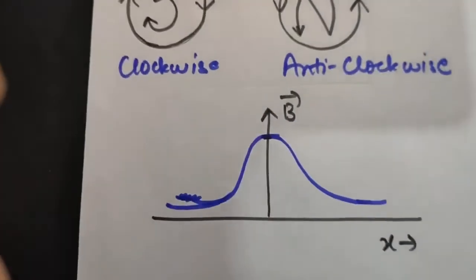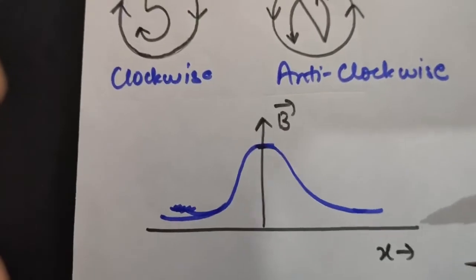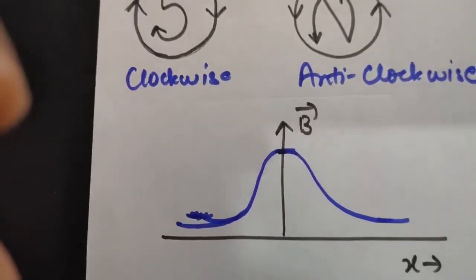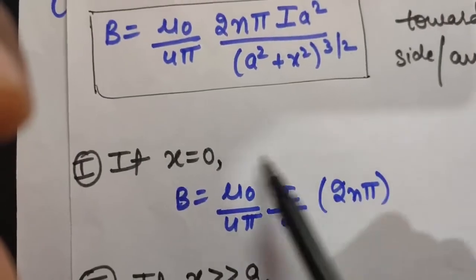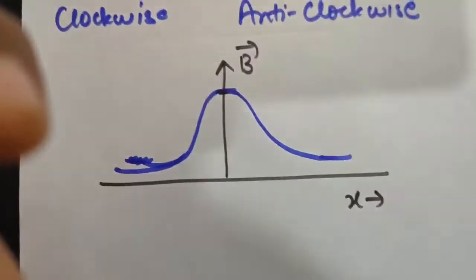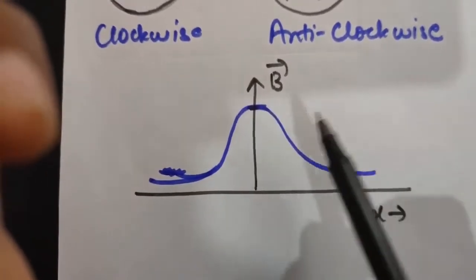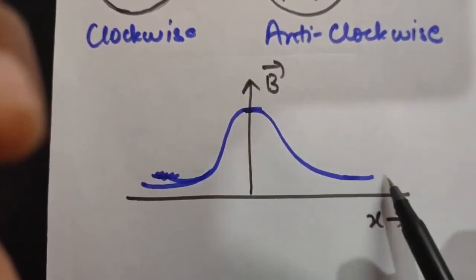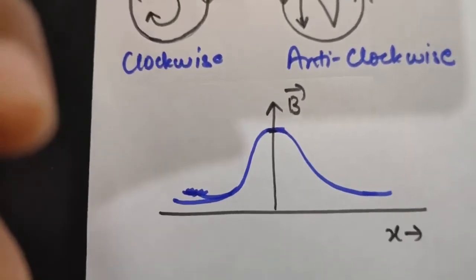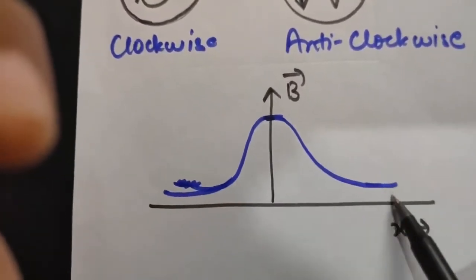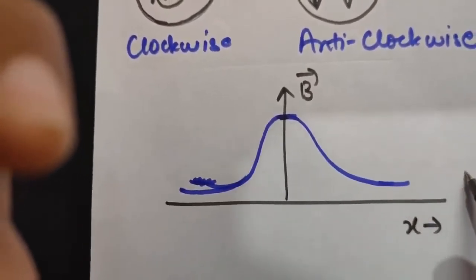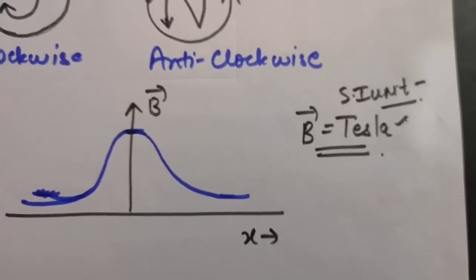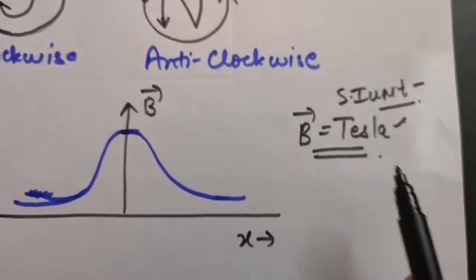Now if we draw a graph between B and x: at the center where x = 0, B has a constant value given by the formula (μ₀/4π)(I/A)(2Nπ). As x increases, B decreases inversely, and similarly for the negative side. The SI unit of magnetic field is Tesla.